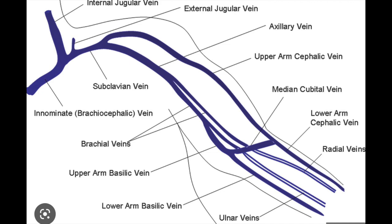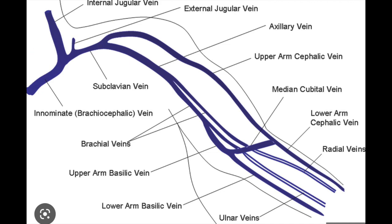The deep veins include the subclavian and the internal jugular. They have characteristic waveforms which we will be subsequently seeing.